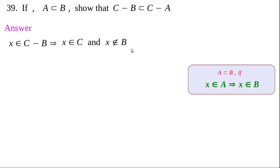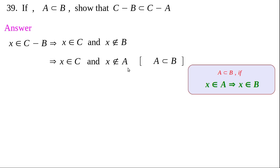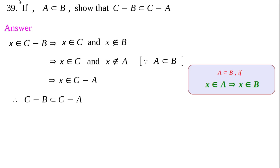So x∈C and x∉B. Since A⊂B and x∉B, it follows that x∉A — if x is not in B and all elements of A are in B, then x cannot be in A. Therefore x∈C and x∉A, which means x∈C−A. So whenever x∈C−B it implies x∈C−A, meaning C−B ⊂ C−A. Question 39 is over.